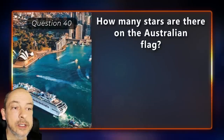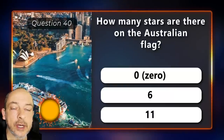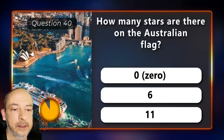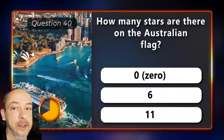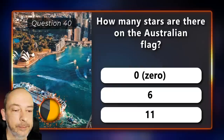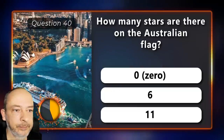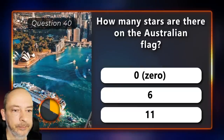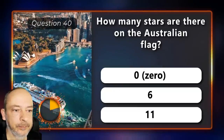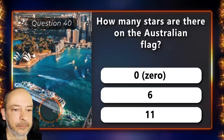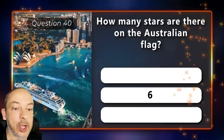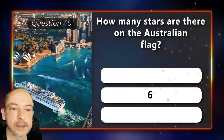How many stars are there on the Australian flag — zero, six, or eleven? And the answer is six.